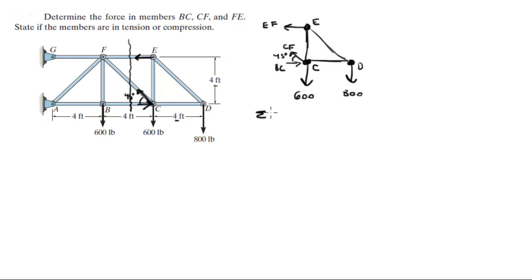So you know that the sum of the forces in the Y is equal to zero in the above assembly. So as you can see, CF sine of 45 minus 600 minus 800 is equal to zero. So when you solve for CF, you get that CF is equal to 1980 pounds.